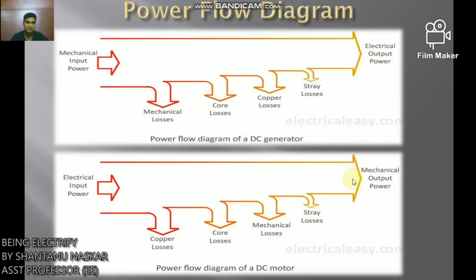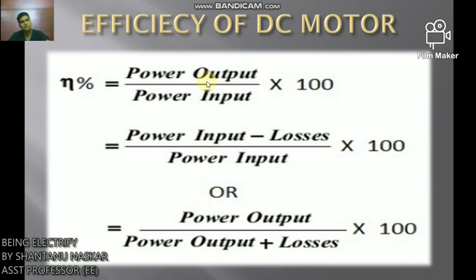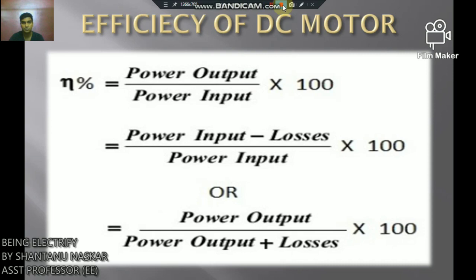Efficiency: percentage efficiency = (Power Output / Power Input) × 100 = (Power Input − Losses) / Power Input × 100, or equivalently, Power Output / (Power Output + Losses) × 100. Efficiency is maximum when variable loss equals constant loss. Remember: maximum efficiency condition is variable loss = constant loss.